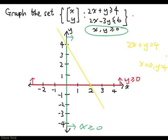Now, this is the line for 2x plus y equal to 4, but we want 2x plus y greater than or equal to 4. So not just points on the line, but points on the side of the line that gives 2x plus y greater than or equal to 4. So how do we figure that out?